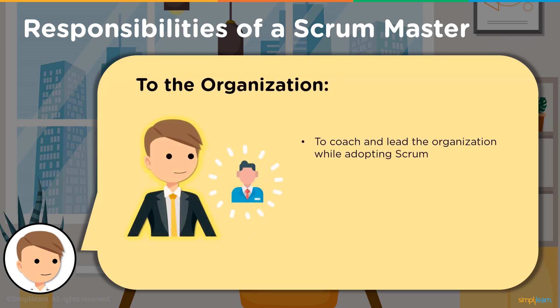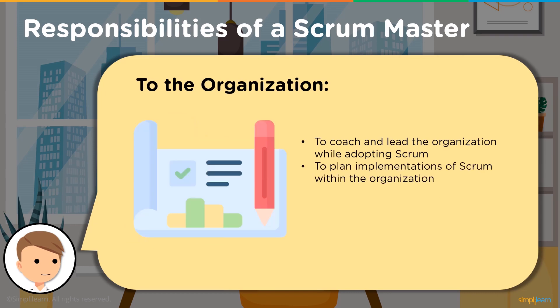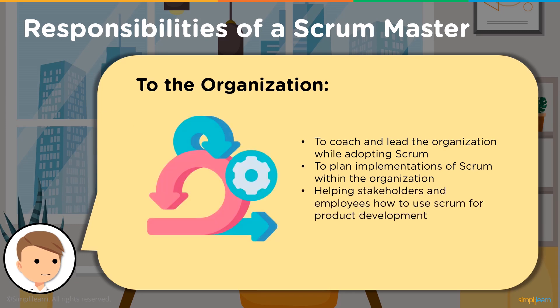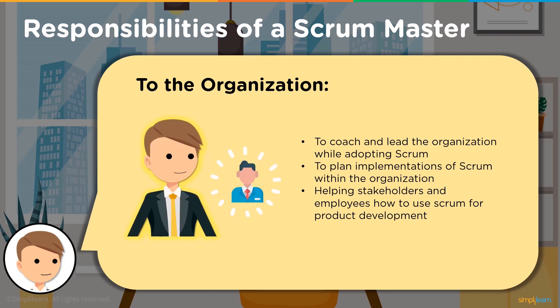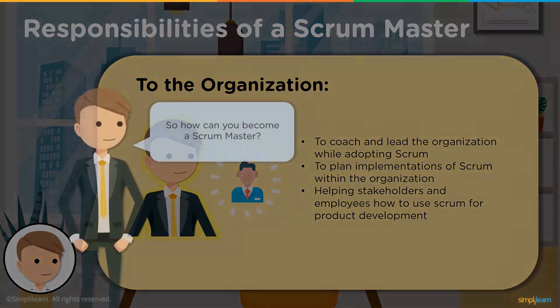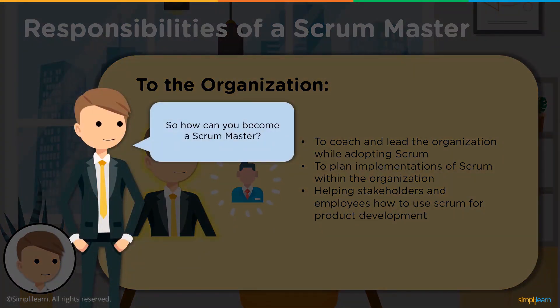Regarding responsibilities to the organization: the Scrum Master leads and coaches the organization in its adoption of Scrum, helps plan the implementation of Scrum, and helps employees as well as stakeholders understand how Scrum increases the value produced. Finally, the Scrum Master helps make changes that increase the Scrum team's productivity.